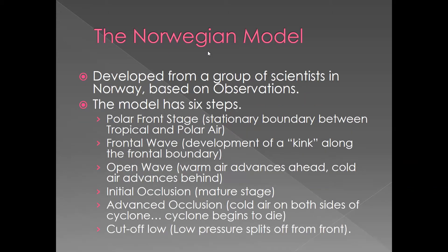There are six key stages to the polar front theory. I'm going to blitz through them right now, and then talk about them more in depth. The first step is called the polar front stage. In the polar front stage, you have a warm air mass to the south and a cold air mass to the north, and they really aren't moving relative to each other — so between them, you have a stationary front. Then something happens: some kind of disturbance causes a kink to develop.